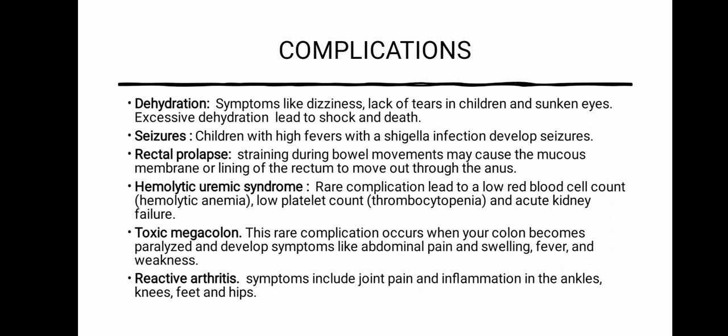Then rectal prolapse — straining during bowel movements may cause the mucous membrane or lining of the rectum to move out through the anus, due to severe dysentery. Then hemolytic uremic syndrome, which is a rare complication leading to low RBC count, low platelet count, thrombocytopenia and acute kidney failure. Then toxic megacolon, a rare complication where the colon becomes paralyzed and symptoms include abdominal pain and swelling, fever and weakness. And reactive arthritis, with symptoms of joint pain and inflammation in the ankles, knees, feet and hip.